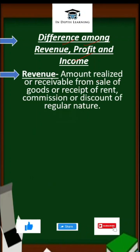The amount which is received or receivable from sale of goods is known as revenue. It also includes receipt of rent, commission, and discount of regular nature.